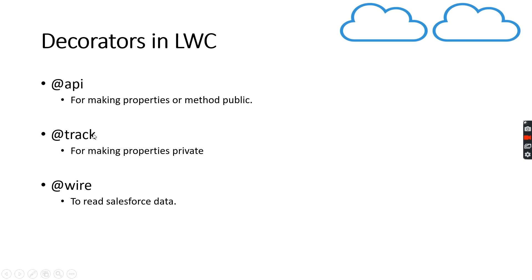The @api decorator is used to make properties or methods in a lightning web component public. This way they are accessible outside of the component in which they are declared. For example, a parent component can set the value of a property in a child component.